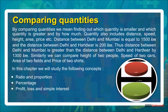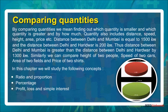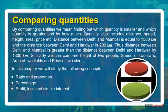The distance between Delhi and Haridwar is 200 kilometres. Thus, the distance between Delhi and Mumbai is greater than the distance between Delhi and Haridwar by 1300 kilometres. Similarly, we can compare heights of two people, speed of two cars, areas of two fields, and prices of two shirts. In this chapter we will study the following concepts: ratio and proportion,